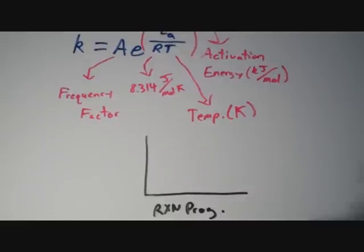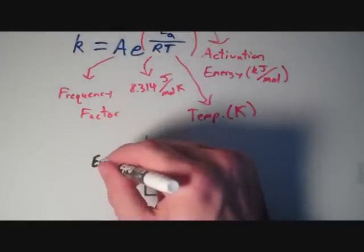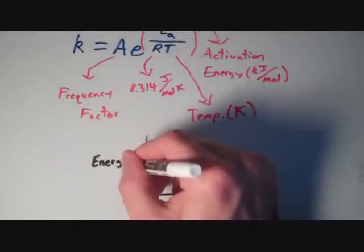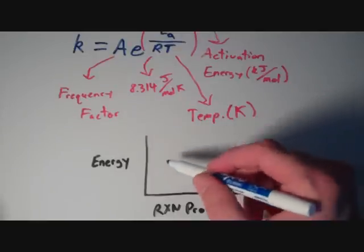There we go. And then on the y-axis, we have energy. And for any chemical reaction, the energy versus reaction progress diagram looks sort of like this.